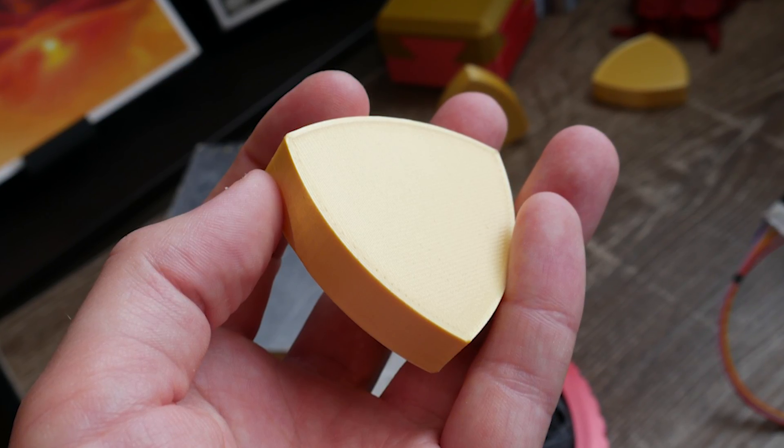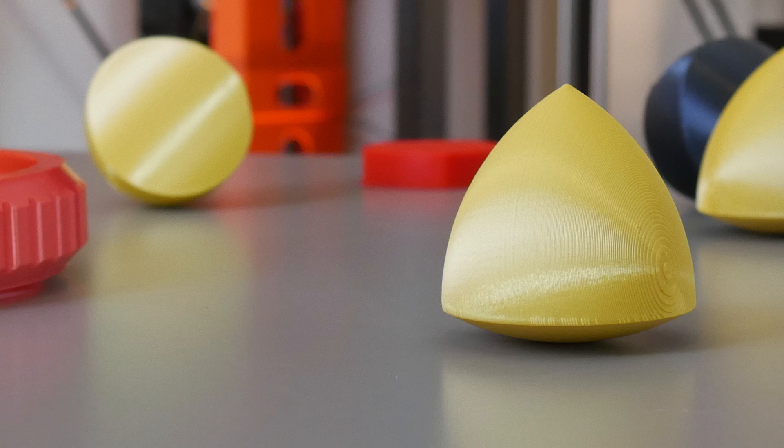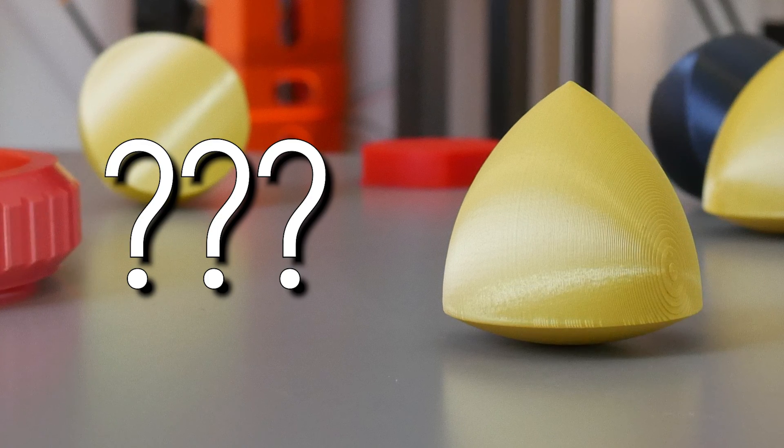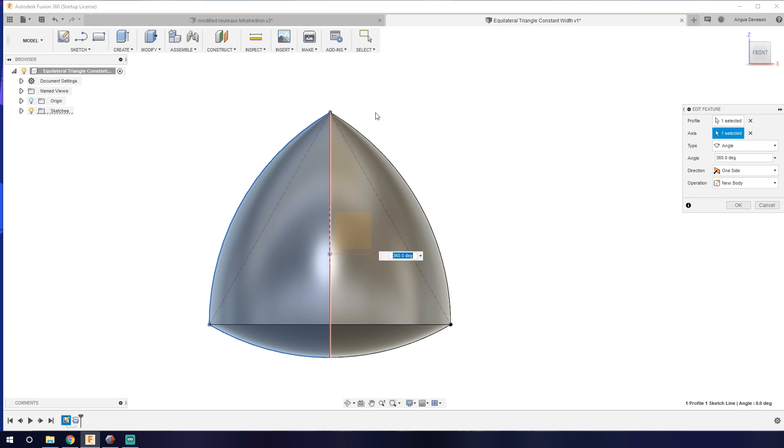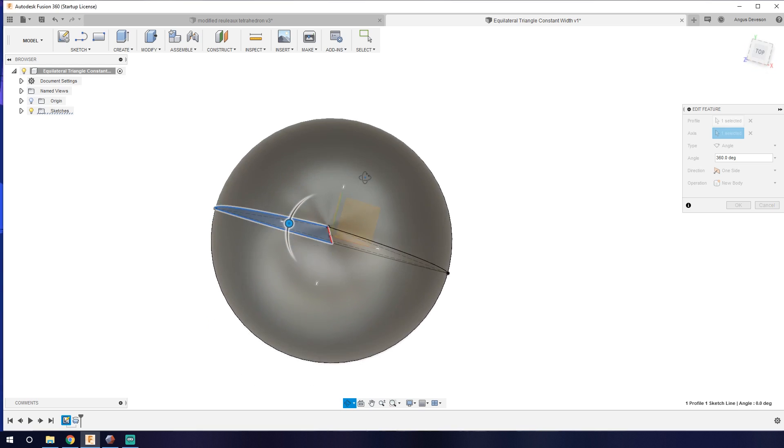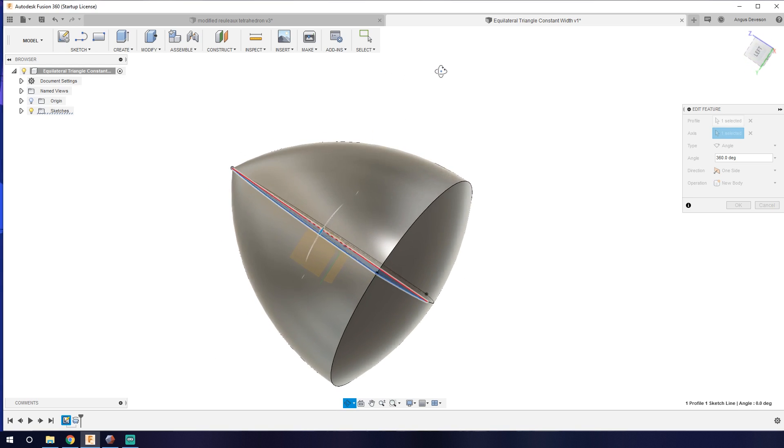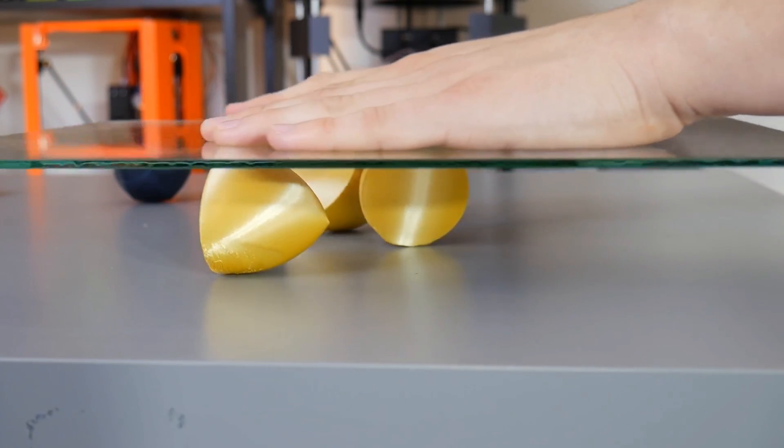2D shapes are fun, but creating a three-dimensional solid of constant width is what really captured my imagination. Beyond just giving the 2D curves thickness, you can revolve a number of curves of constant width around an axis to create solids of constant width.